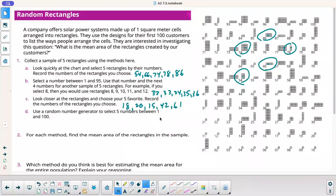Use a random number generator to select five numbers between 1 and 100. I have one over here. I'm using it on my phone. First one is 30. Next one is 83. Next random number, 07. Next one, 68. And the next one, 21. For each method, find the mean area of the rectangles in the sample.